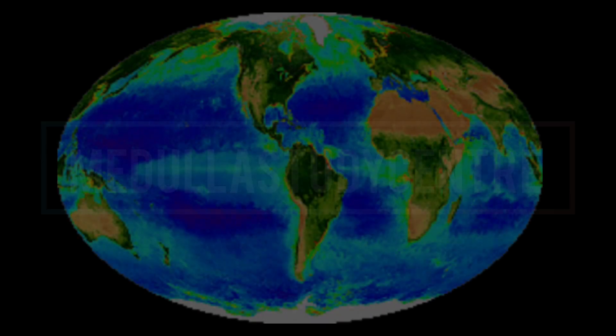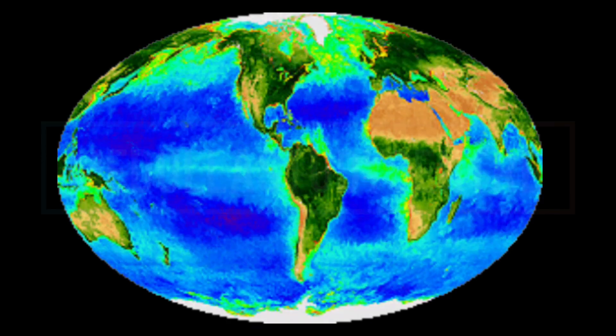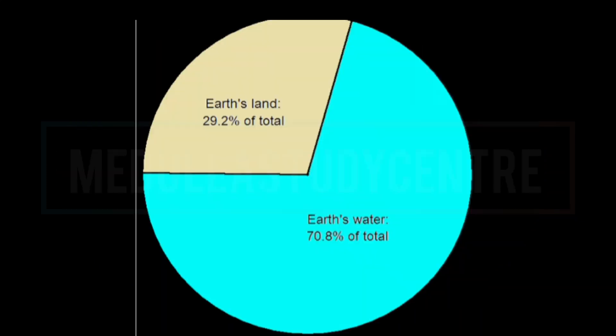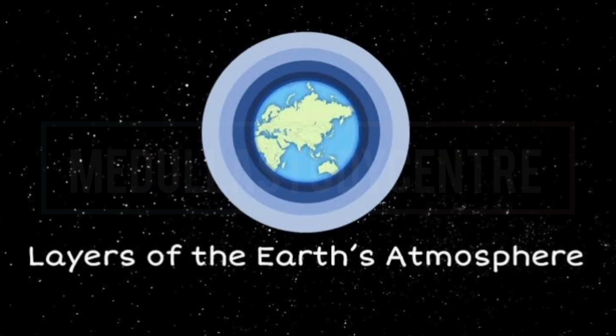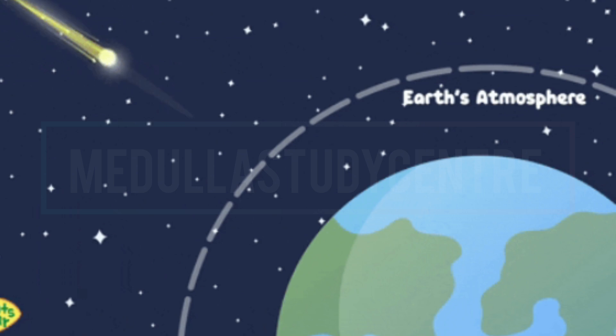our Earth is made up of land and water. And 70% of Earth's surface is covered with water and only 30% is covered with land. Our Earth is surrounded by a layer of air that is called atmosphere.